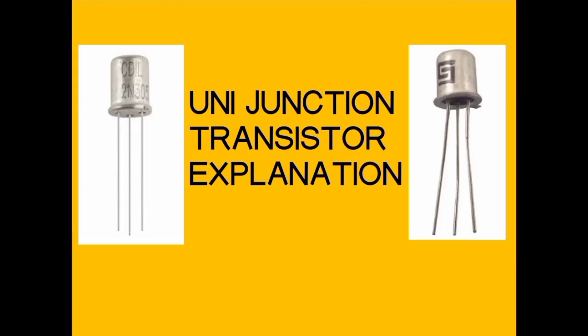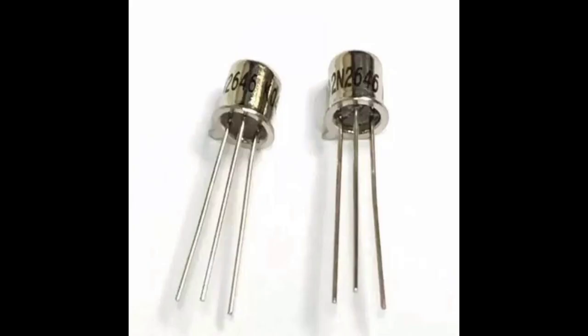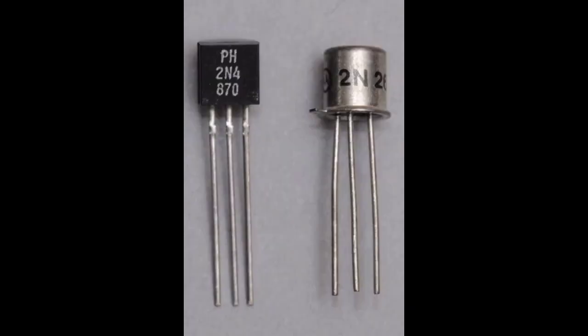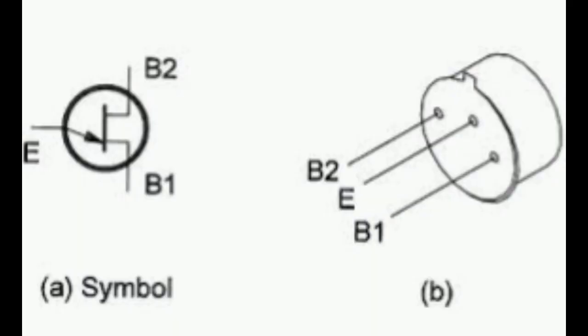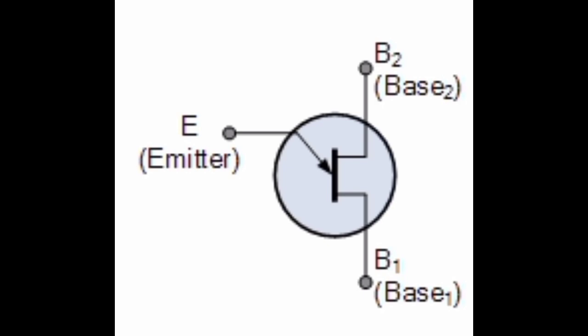In this video we are going to see about UJT, the unijunction transistor. This is how a unijunction transistor looks like. The BJT transistor link is given in the description — watch that video for better understanding. The unijunction transistor is a three-lead electronic semiconductor device with only one junction. It acts exclusively as an electrically controlled switch.